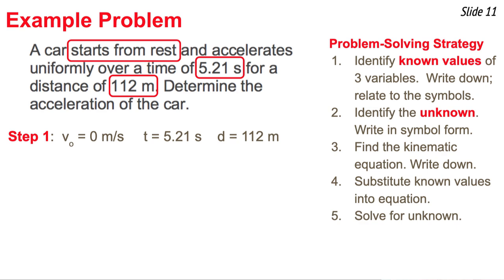Now I look for what am I trying to find, identify the unknown, and write it down in symbol form. And I'm looking for the acceleration, determine the acceleration of the car. So what I do is I write down a equal question mark, or find a, or something like that. Now I have four variables.